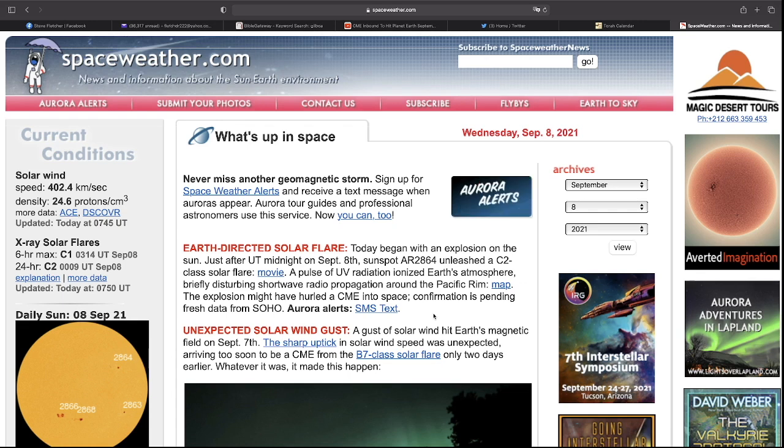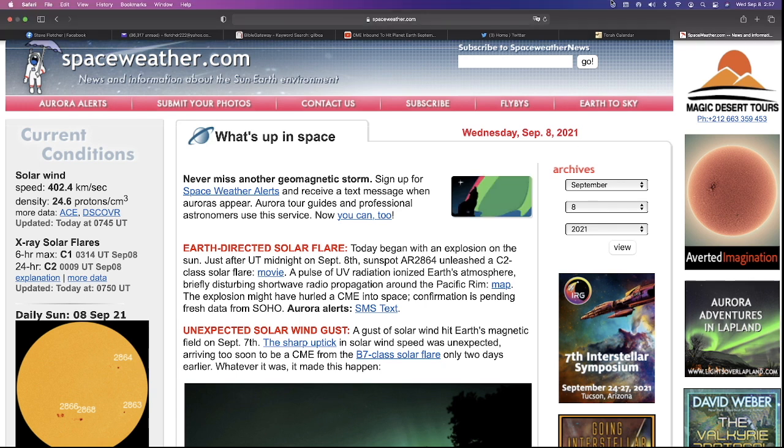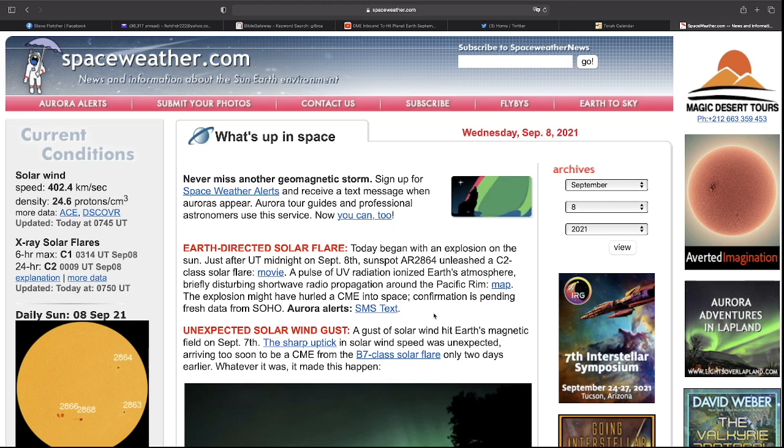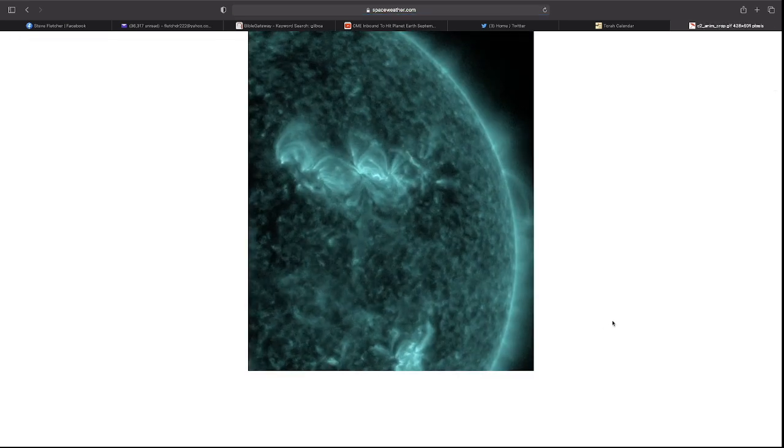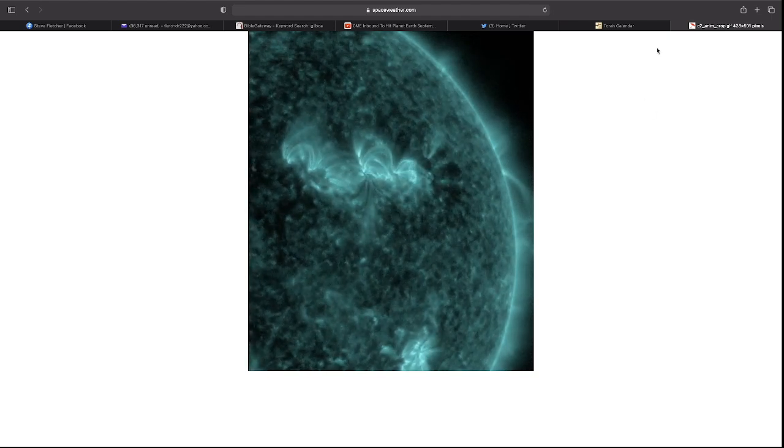But I want to share this first. Earth-directed solar flare. Today, September 8th, began with an explosion on the sun just after UT midnight. So this is a new one, just happened here. Sunspot AR-2864 unleashed a C-2 class solar flare. I guess you can see the movie of it. Okay, that's the movie of it.